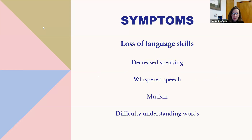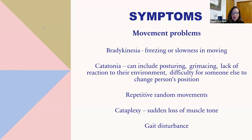There can be a loss of language skills — some people decrease their speaking. We hear a lot about people whispering or people not talking at all, in a person who usually used spoken language to communicate. There can be movement problems such as bradykinesia, which is freezing or slowness in moving, and catatonia, which is a lack of reaction to the environment and sometimes getting stuck in a posture — like stuck with their arm up or stuck in the middle of going up the stairs. There can be grimacing or unusual facial expressions, and cataplexy — sudden loss of muscle tone, just falling to the floor — and difficulty walking.